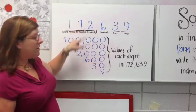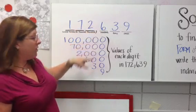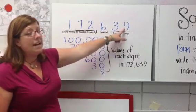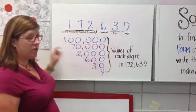The 2 in the thousands is 2,000, the 6 in the hundreds is 600, the 3 in the tens is 30, and the 9 in the ones is 9. And so these are the values of each digit.